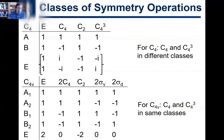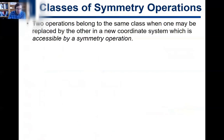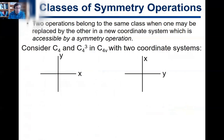So how do we determine this? Here is the mathematical definition: two operations belong to the same class when one may be replaced by the other in a new coordinate system which is accessible by a symmetry operation. Like many mathematical concepts, it's best to see an example.